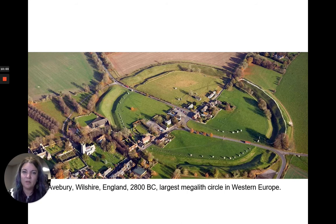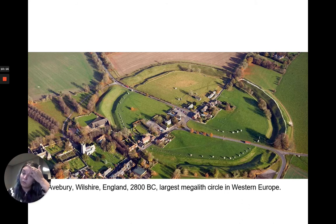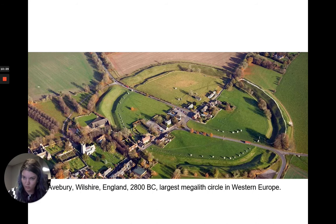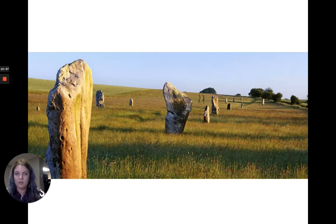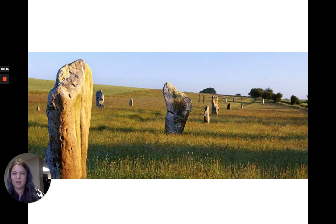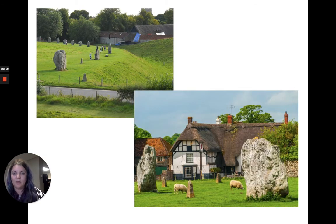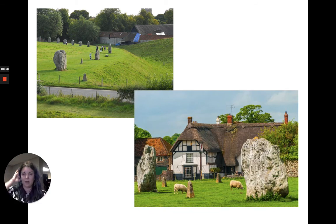Less famous but perhaps as cool as Stonehenge — I'm a huge fan of this one — is Avebury, near Salisbury. It's older than Stonehenge at 2800 BC, and it's actually the largest megalithic stone circle in Western Europe. Here's an aerial view: you can see there's a little town, Avebury, that's sort of been built inside it. Some of the stones are actually larger than the stones at Stonehenge, though some have been taken away over the years for other construction. There's even a pub within the circle — the Red Lion pub — and you can actually go and have a pint of beer within this ancient stone circle. I have been there; I have had beers there.